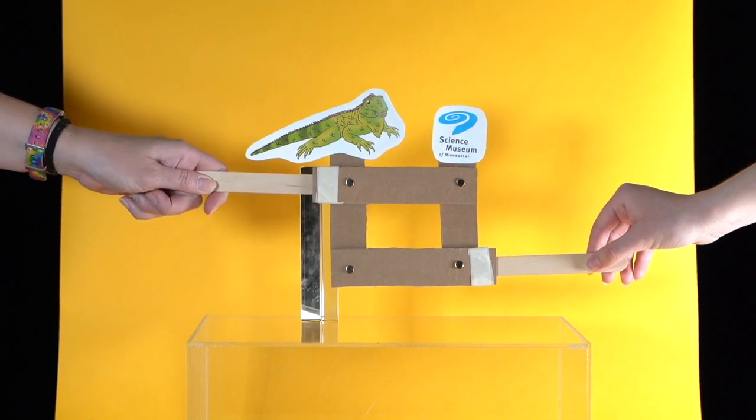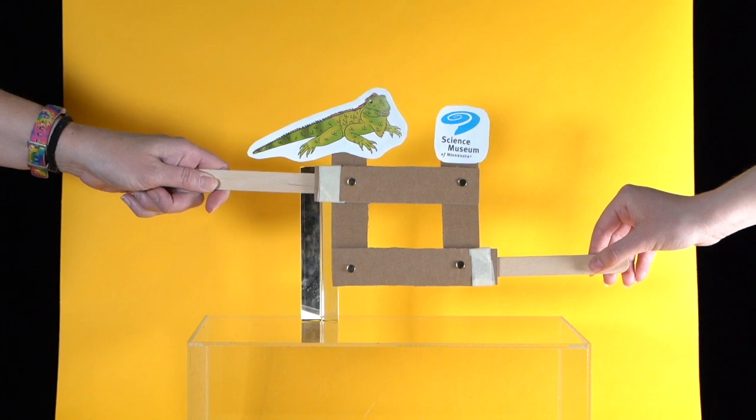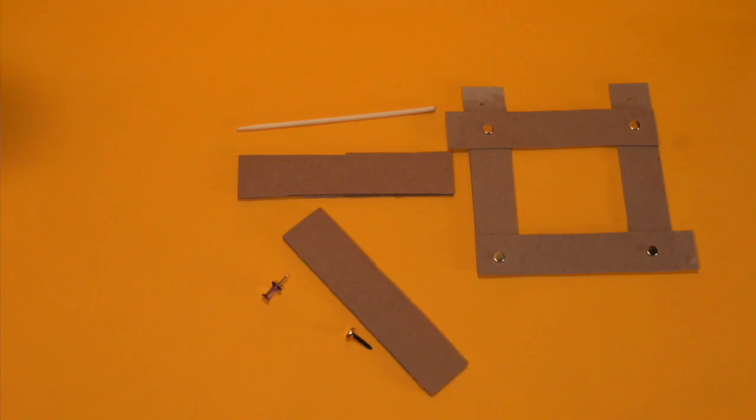You can create your own parallel motion device by using these materials. You cut your cardboard into strips to create the levers. Use brass fasteners to act as floating pivots.